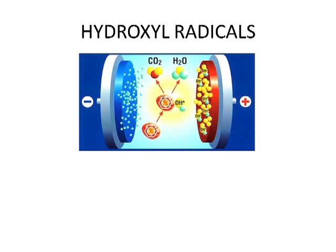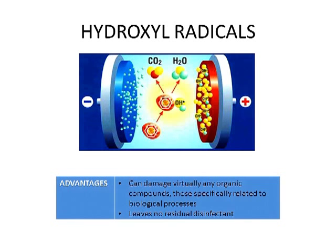Hydroxyl radicals: the plasma causes water to dissociate into hydroxide ions and hydrogen ions. These ions act as strong oxidants and destroy bacteria and viruses through similar processes as with ozone. These radicals dominate the oxidation process in water treatment and are produced with the help of other oxidants such as ozone and other energy sources such as UV radiation. Some advantages of using hydroxyl radicals are that they can break down virtually any organic compound, including those specifically related to biological processes, and they leave no residual disinfectant at the end of treatment.